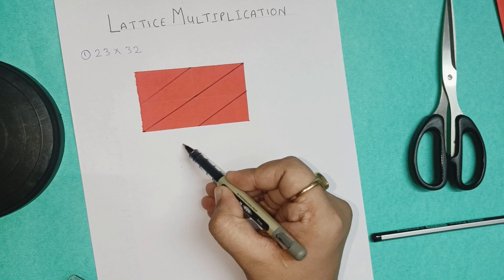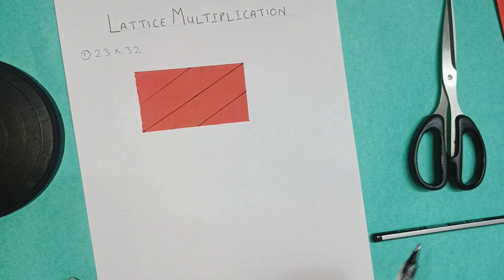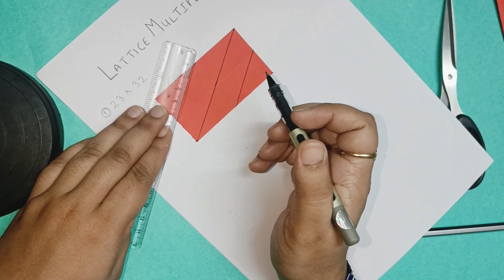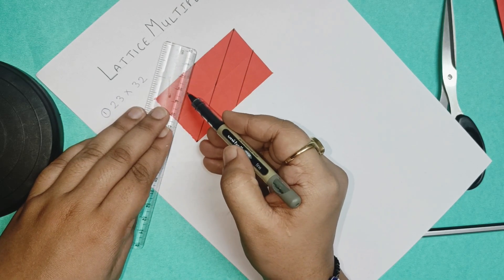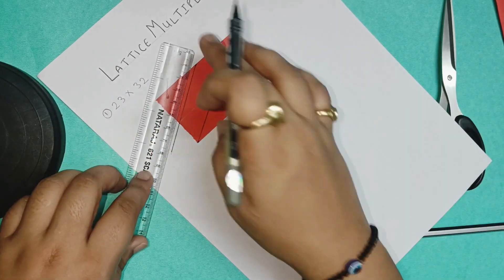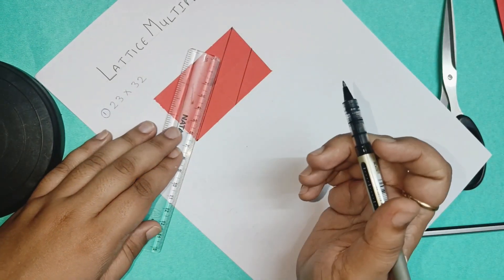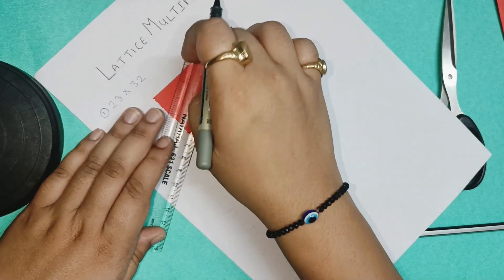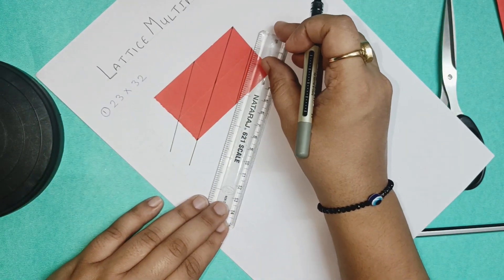We have to extend these lines a bit on this side. So use ruler again and extend the lines. Make sure to extend them a bit only, not much. But we need only a bit of extension of these lines. Like this only. This much extension is fine.